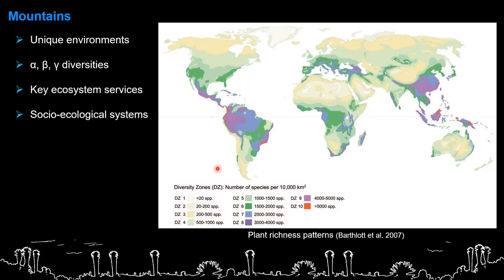Mountains in general are almost always found in areas of the globe where you have high biodiversity. Here you can see a map of the biggest diversity zones - this is gamma diversity. You can see that several mountains actually coincide with the areas with the most species. For example, we have the Andes, the Himalayas, and Papua New Guinea. The tropical mountain areas are a little bit more diverse than the temperate ones, but overall we see very high biodiversity.